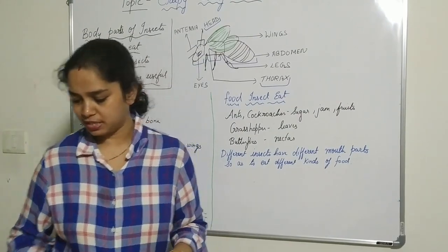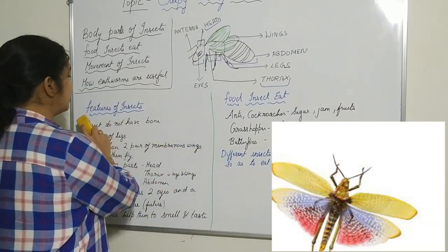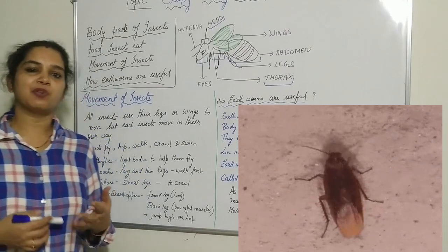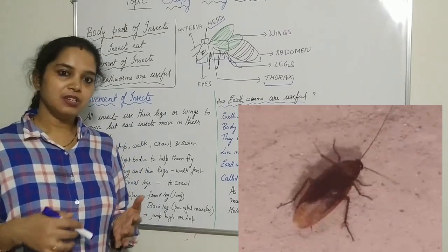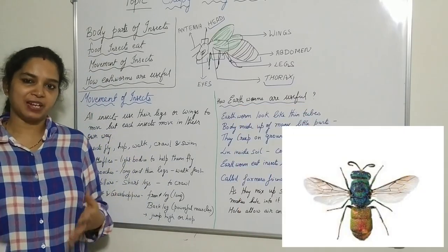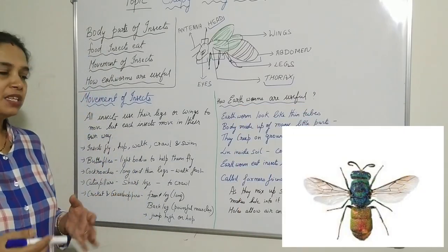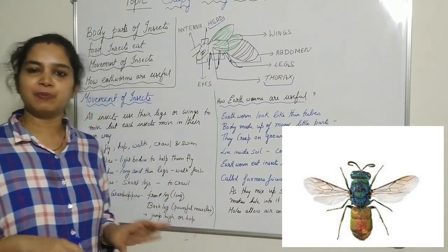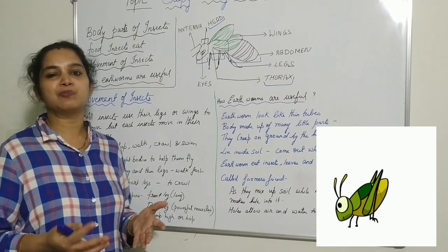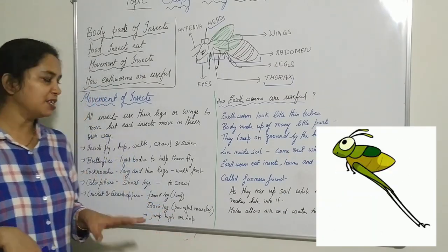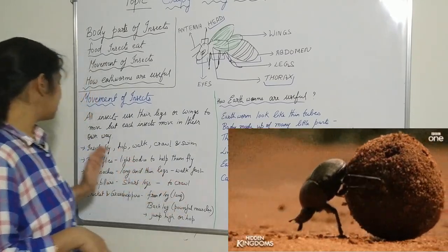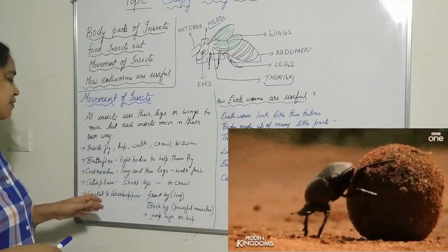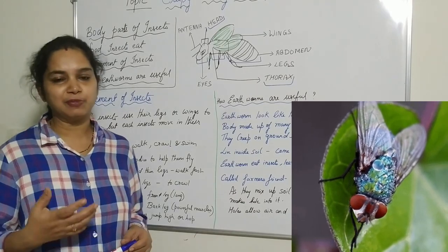Now let's look at the movement of insects. Insects use their legs and wings for movement. Some insects fly — the butterfly, housefly, and bee all fly with the help of wings. Some insects crawl or creep on the ground, and you might have seen the grasshopper hop on the ground. So insects can fly, hop, walk, crawl, and some insects can even swim.